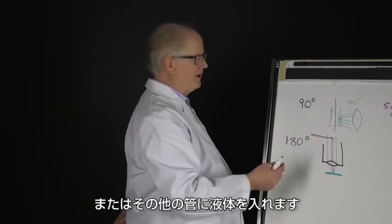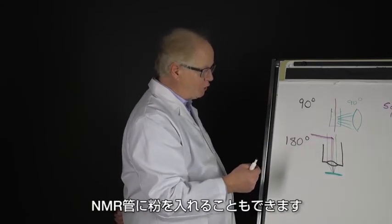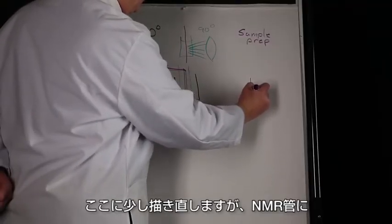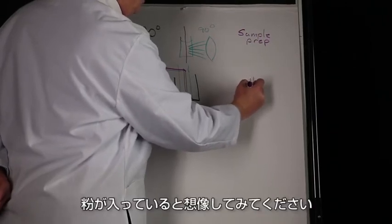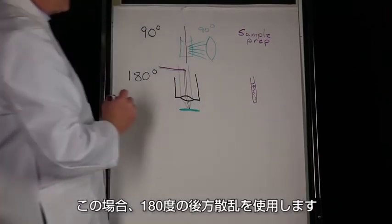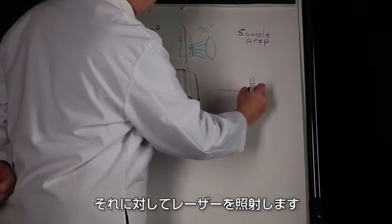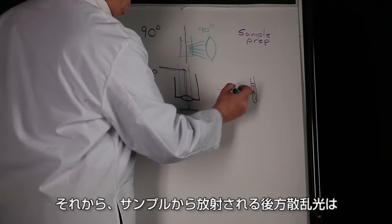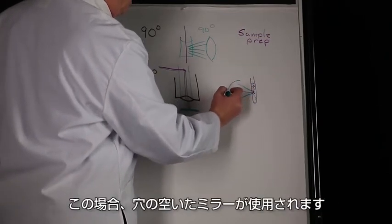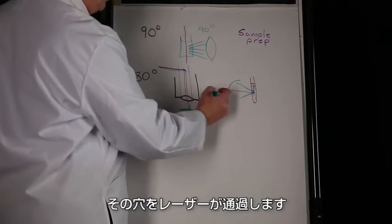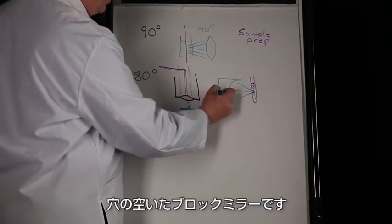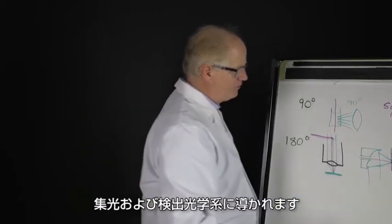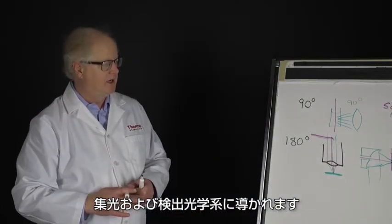In this case you've got a liquid contained in an NMR tube or some other vessel. You can put a powder in an NMR tube as well. Using 180-degree backscatter, you shine the laser in on it, and the backscattered light coming off the sample is collected by a mirror that has a hole in it — the hole is where the laser comes through. The laser passes through the hole, and the Raman light is collected and directed on to the collection and detection optics. It's all very simple.